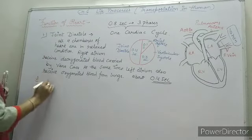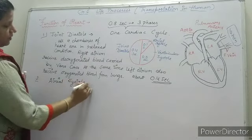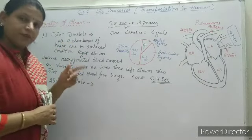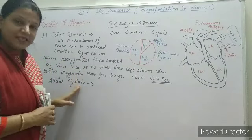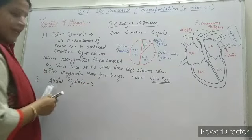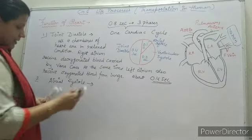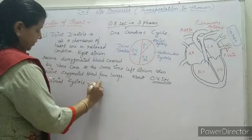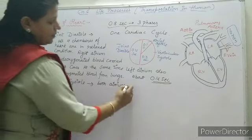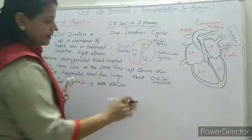The second phase arises after that — that is atrial systole. The word diastole is used for relaxation mode of heart muscles, and systole is used for contraction mode of heart muscle. During atrial systole, the atria get contracted and simultaneously both atria pour their blood into their respective ventricles.